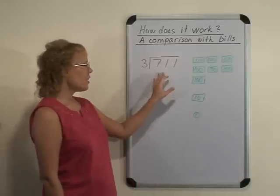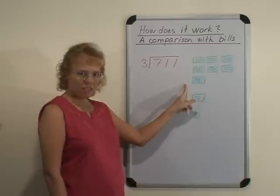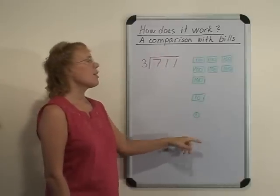Here we have 711 divided by 3, and we're comparing it to a money amount where we have seven hundred dollar bills, then one ten dollar bill, and then one dollar coin.